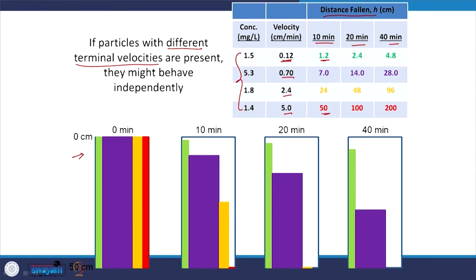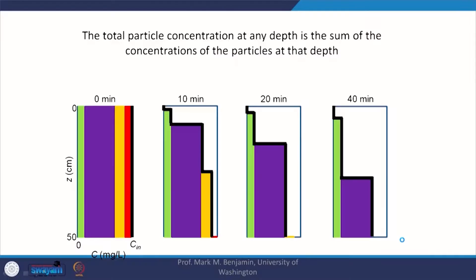Obviously, a particle with a greater settling velocity will travel a greater distance; one with a lesser settling velocity will travel a lesser distance. We are still assuming discrete settling here. After 10 minutes, the particle with the slowest settling velocity only settles a bit, while the one with the highest settling velocity settles a lot — about 50 centimeters. This is more realistic because in wastewater you have particles of different sizes.